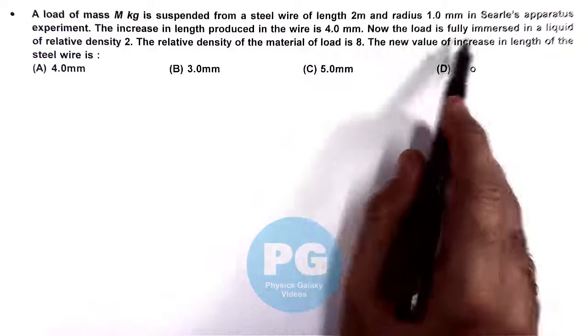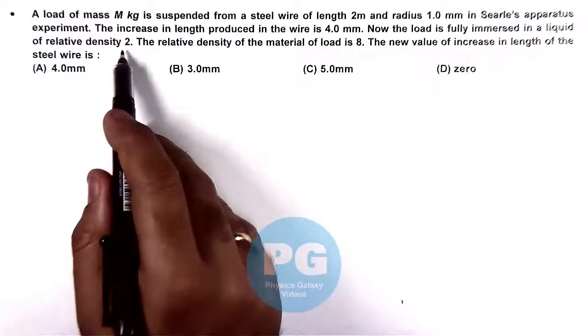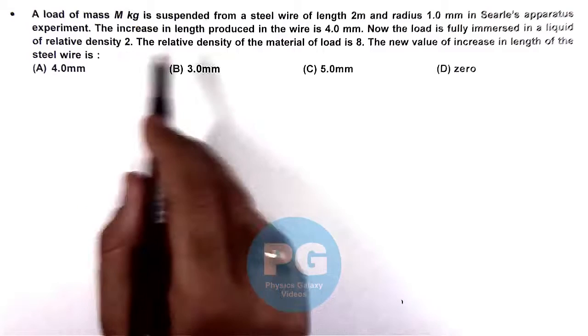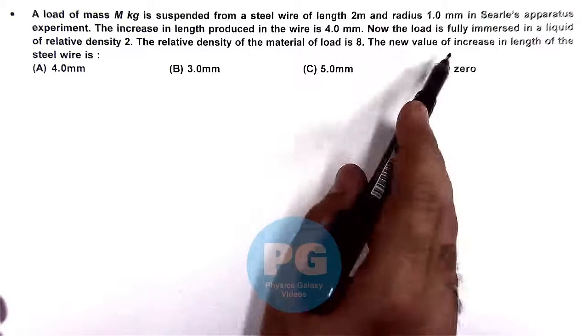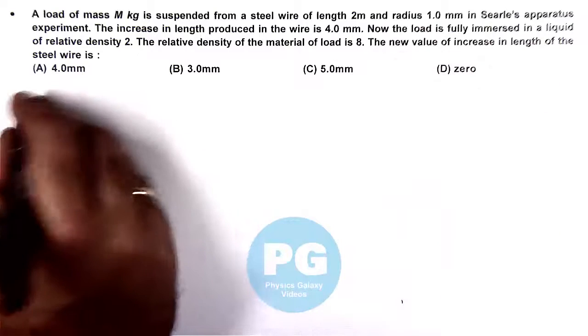Now the load is fully immersed in a liquid of relative density 2, and the relative density of material of load is 8. We are required to calculate the new value of increase in length of the steel wire.